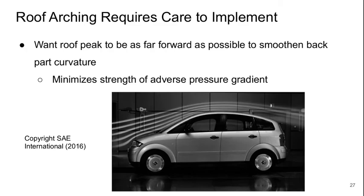Welcome to Part 4 of Lecture 5 of Bluff Body Aerodynamics. We were on the question of why we want to have the peak of the roof arch as far forward as we can. The reason is that by doing this we reduce the amount of curvature on the back part of the roof. That minimizes the strength of the adverse pressure gradient there, which increases the base pressure and reduces the overall vehicle drag.